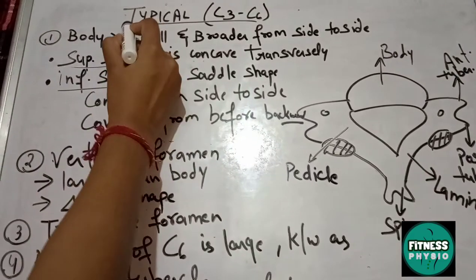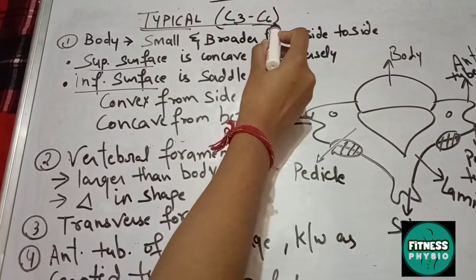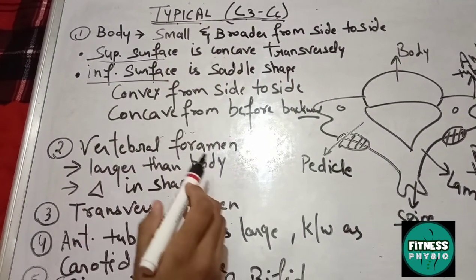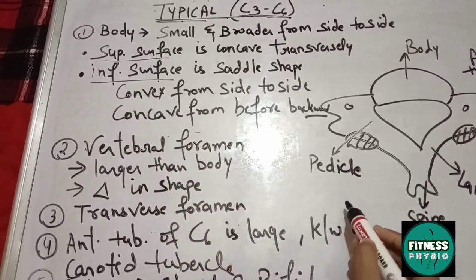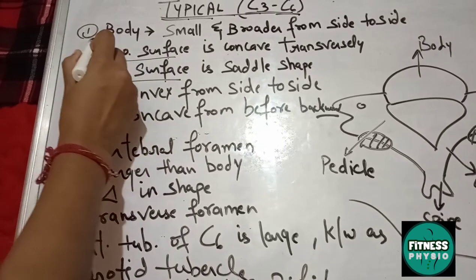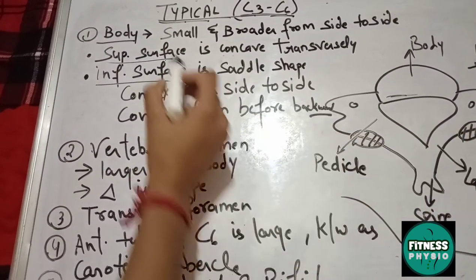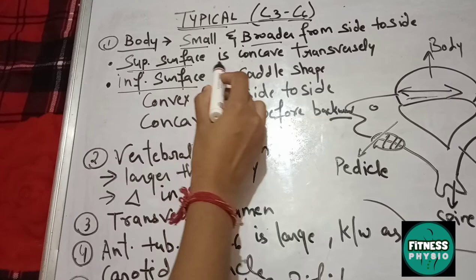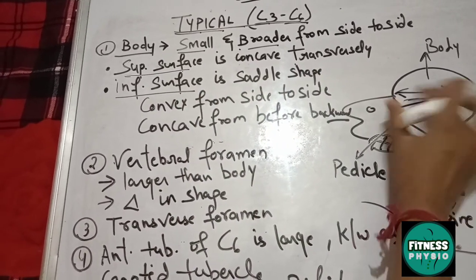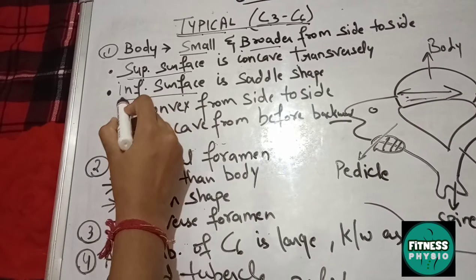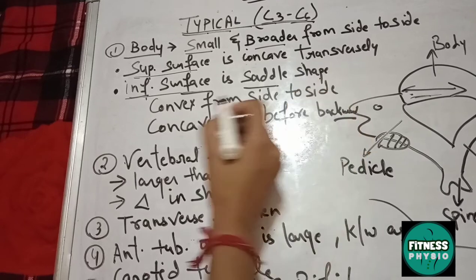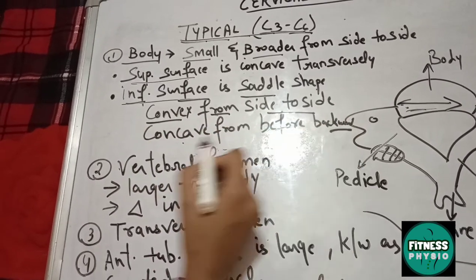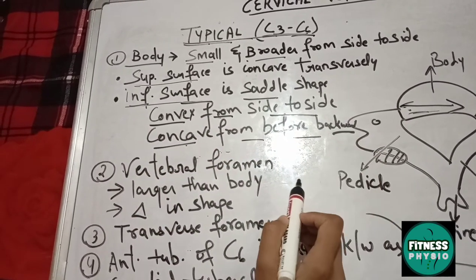Typical cervical vertebrae consist of C3 to C6, and all share common features. Looking at a diagram of a typical cervical vertebra, the body is small and broader from side to side. The superior surface is transversally concave, while the inferior surface is saddle-shaped — convex from side to side and concave from front to back.